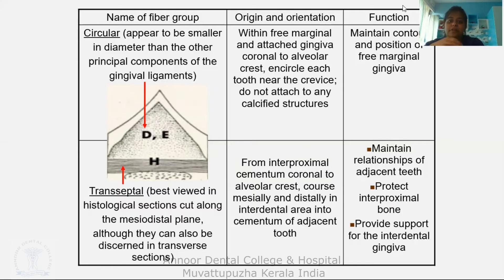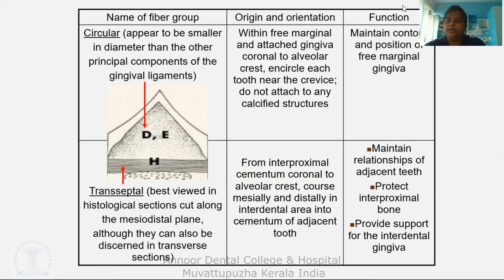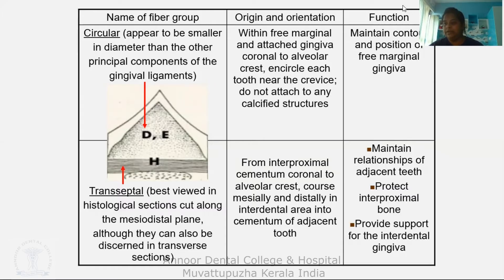The fifth principal group is the transseptal group. Origin: from the interproximal cementum, coronal to the alveolar crest — they course mesially and distally in the interdental area into the cementum of the adjacent tooth, so their position is interdental. Function: maintain the relationships of adjacent teeth, protect the interproximal bone, and provide support for the interdental gingiva.